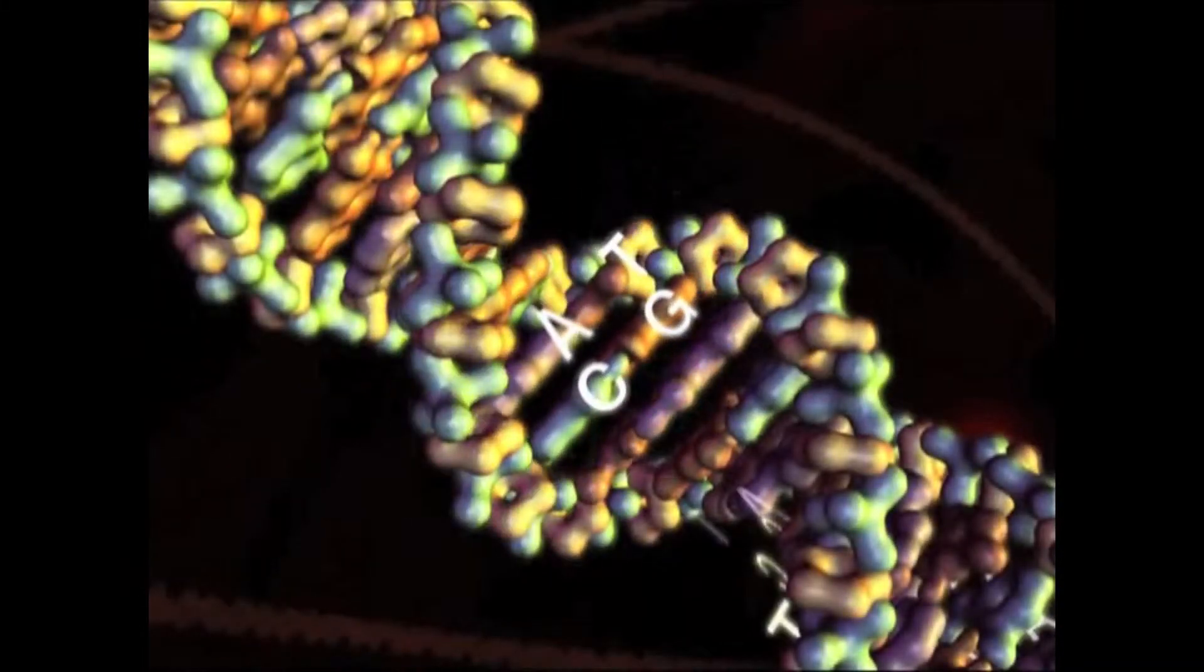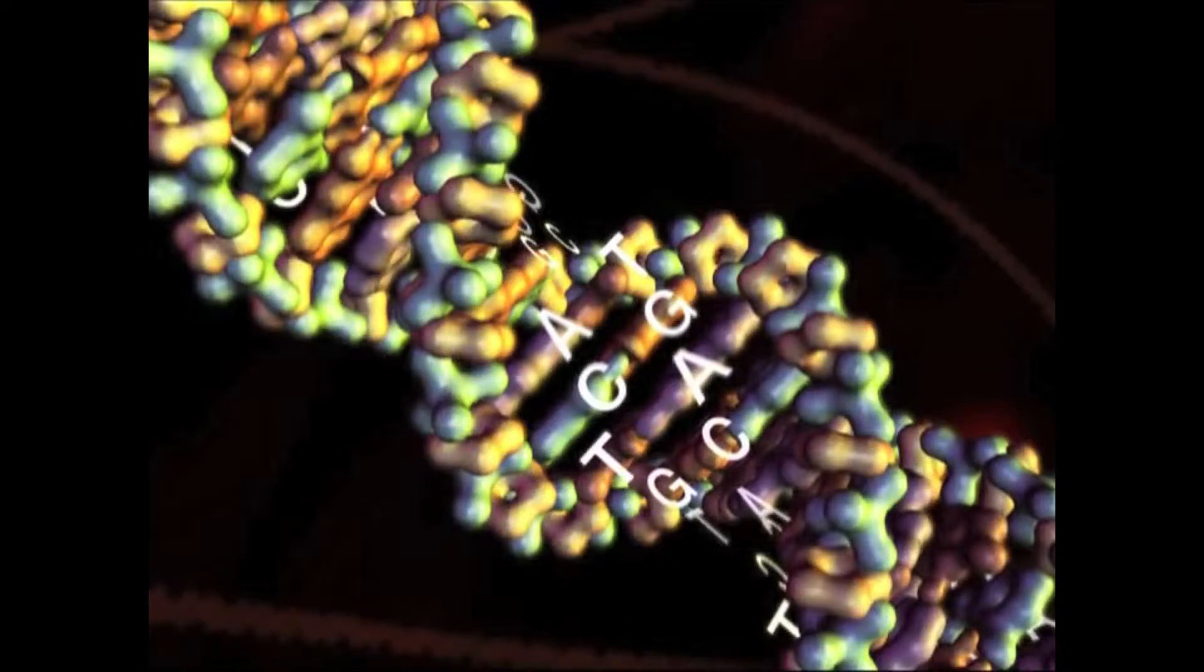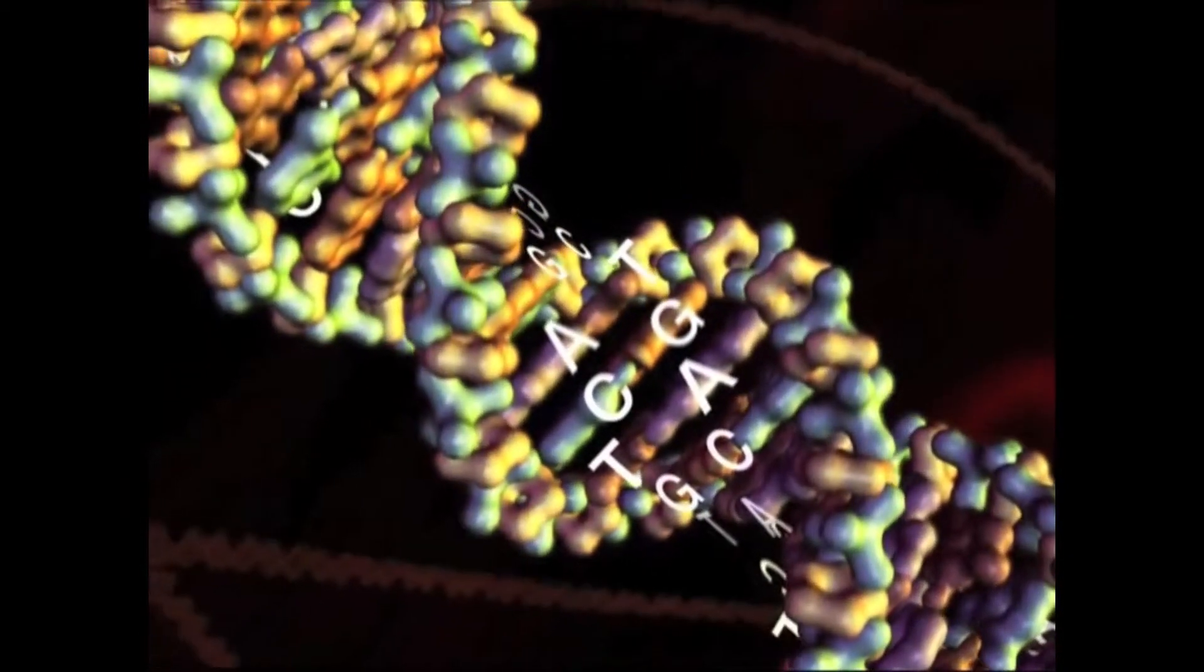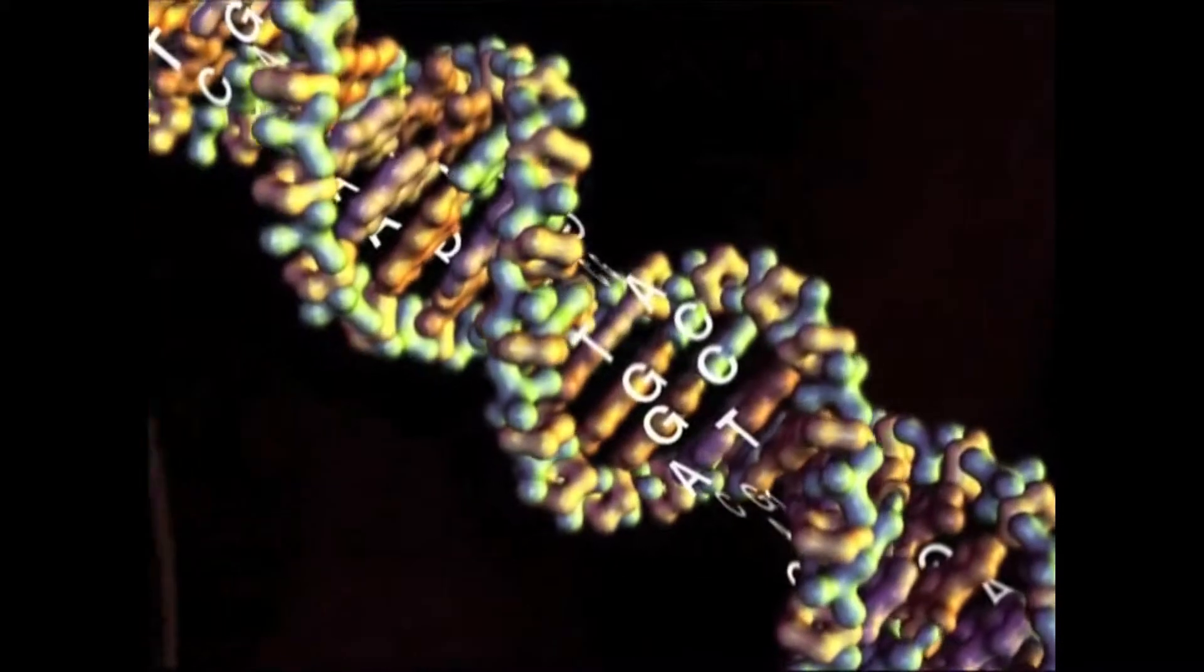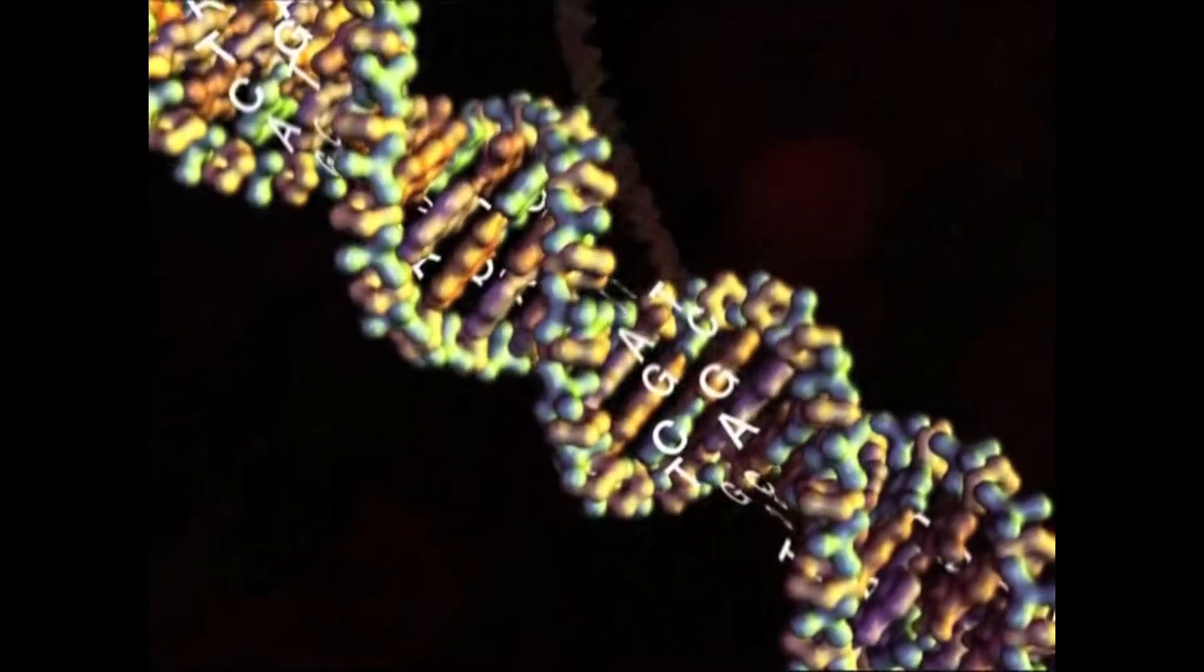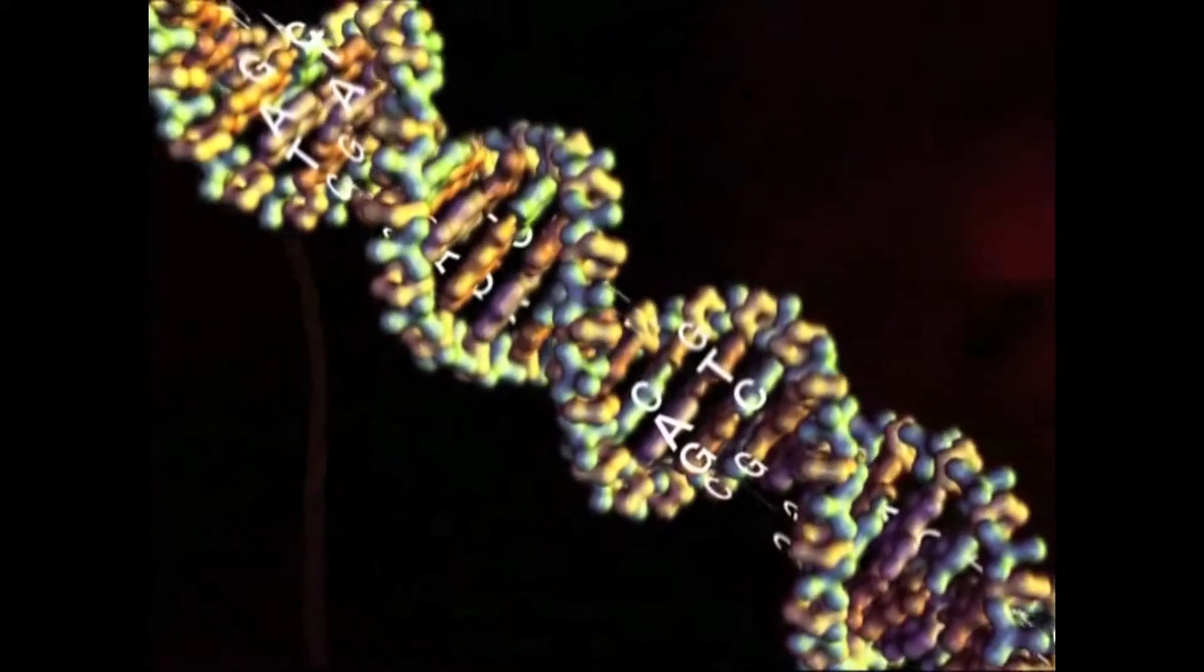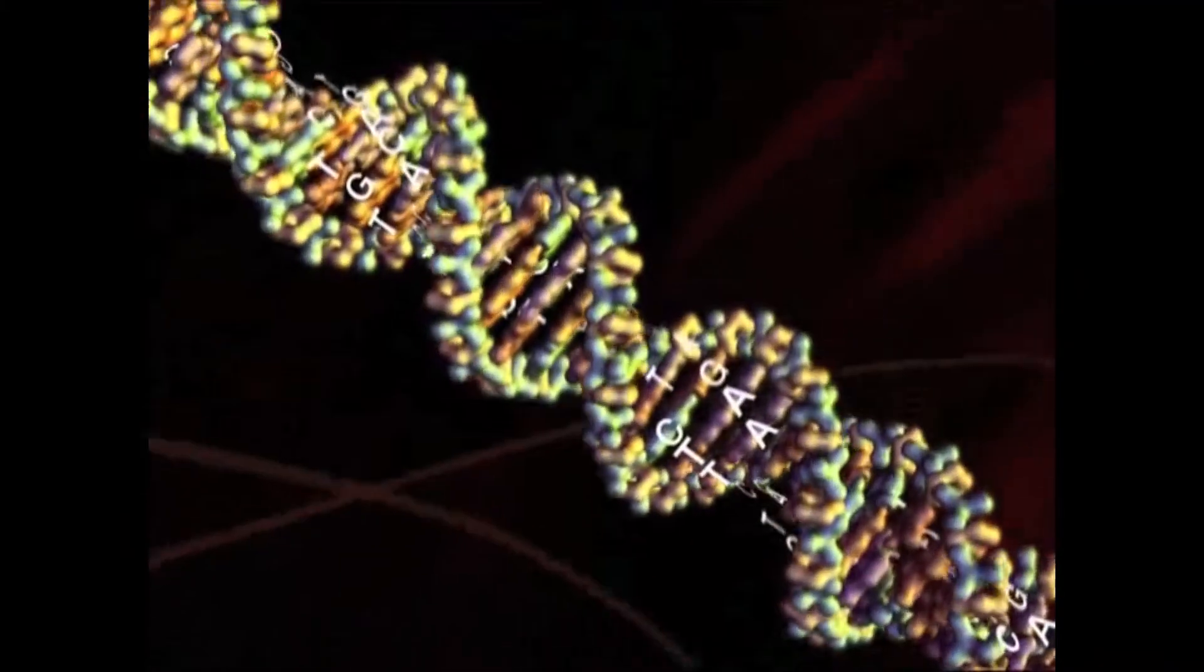In a written language, information is communicated by a precise arrangement of letters. In the same way, the instructions necessary to assemble amino acids into proteins are conveyed by the sequences of chemicals arranged along the spine of the DNA. This chemical code has been called the language of life, and it is the most densely packed and elaborately detailed assembly of information in the known universe.